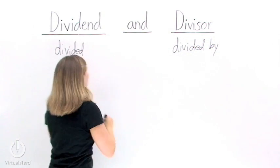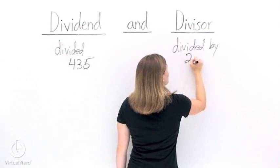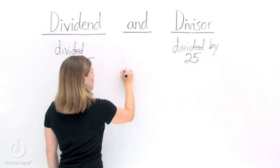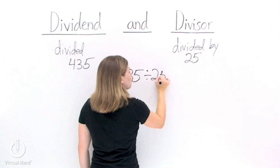So let's take an example. Let's have 435 be our dividend and 25 be our divisor. Now if we want to divide these two, we'll take our dividend first. So 435 divided by 25.